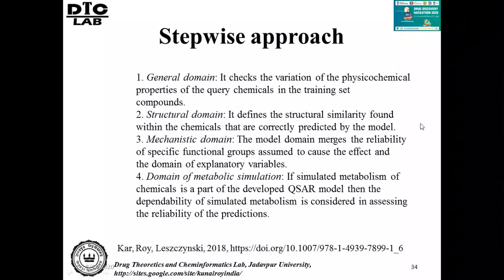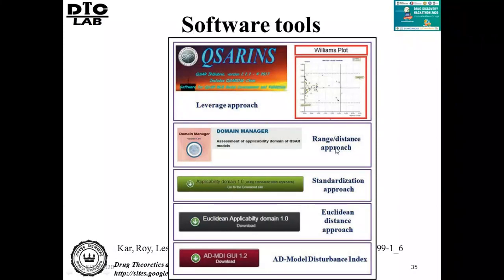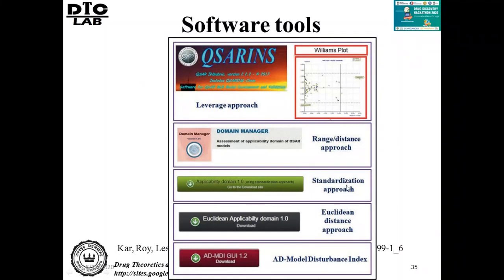Several software tools exist for calculation of applicability domain. One uses the leverage approach, developed by the University of Insubria in Paula Grammatica's group, which produces the Williams plot. Domain Manager uses range and distance-based approaches. The applicability domain using the standardization approach I already discussed. Equilibrium applicability domain and ADMDI index-based approach are also available. The last three — standardization approach, equilibrium domain, and ADMDI index-based approach — are available at specified sites where calculation of domain using these approaches can be done.